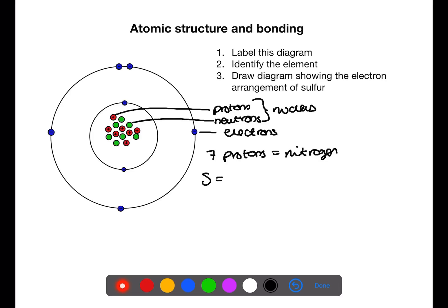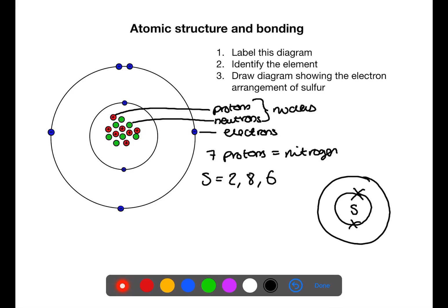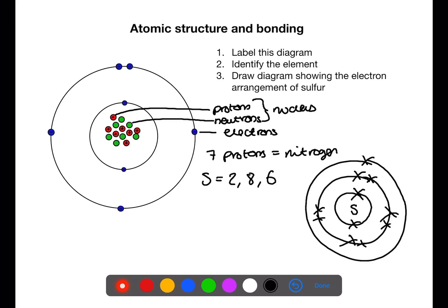Sulfur has an electron arrangement of 2, 8, 6. To draw this out we place sulfur in the center, then we have the first shell which has two electrons, the second shell which has eight electrons, and then the third shell which has six. Remember that electrons fill as four single electrons before pairing up.